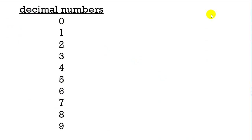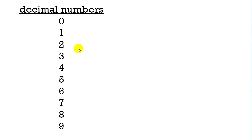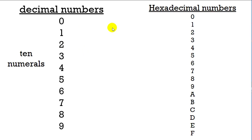We know how decimal numbers work — we learned that in first grade or even kindergarten. There are only ten numerals: zero, one, two, three, four, five, six, seven, eight, nine. Those are the only numerals we have. There are no other numerals. We just combine these to make all the numbers in the whole world. They have ten numerals from zero to nine.